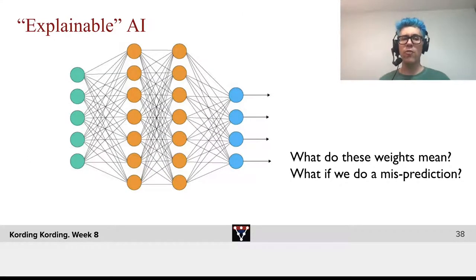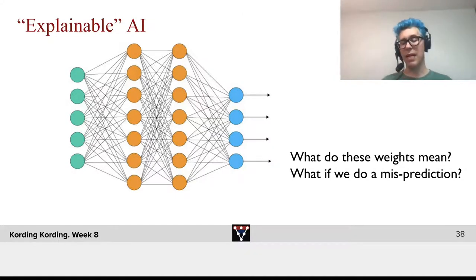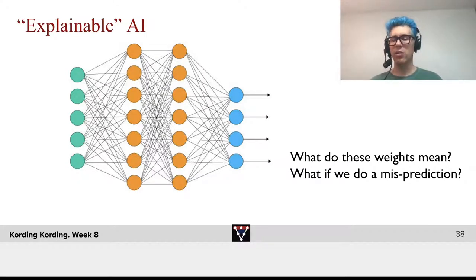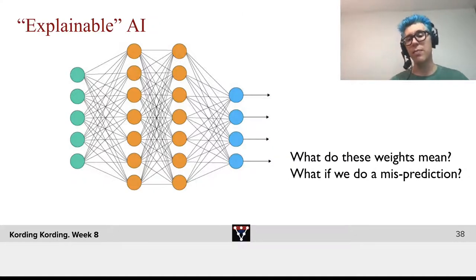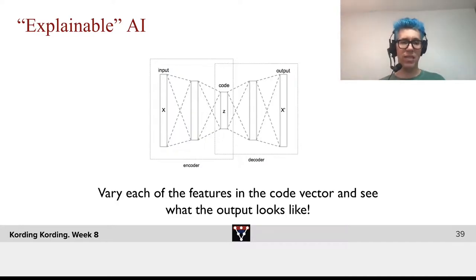We can use it for explainable AI. We have a network, and we want to explain it by forcing it to describe things in a low-dimensional way. We can much more hope that we will be able to interpret what the weights mean, or what's a misprediction, or what's the nature of a misprediction.